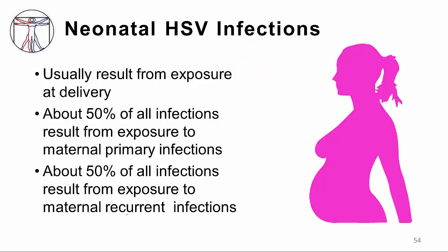Some general comments about neonatal HSV infections. Usually, meaning over 90% of the time, these infections are contracted from exposure to the virus being shed by the mother at the time of delivery. About half of the time the mother's infections result from a primary — that is, a first-time infection in the mother — and about half the time they result from a recurrent infection in the mother.